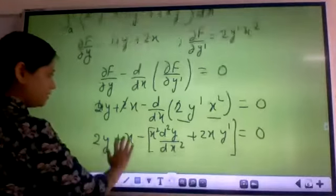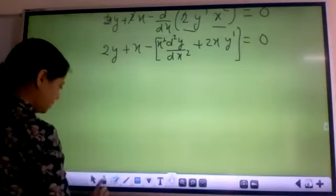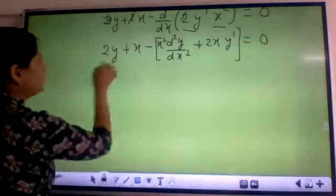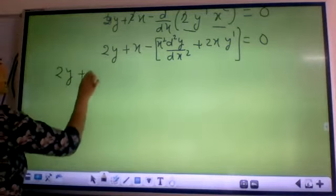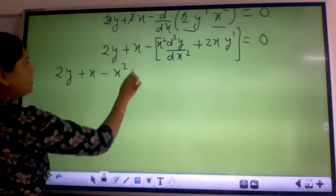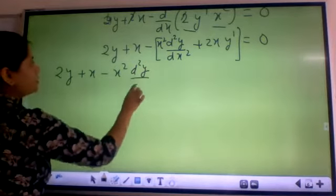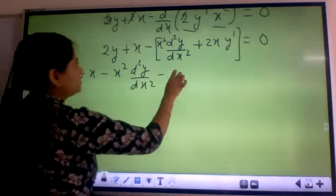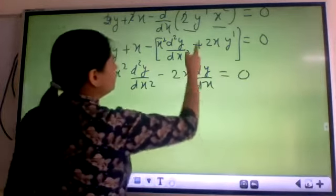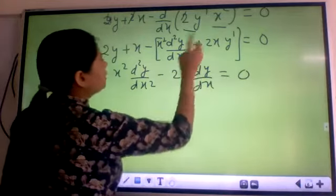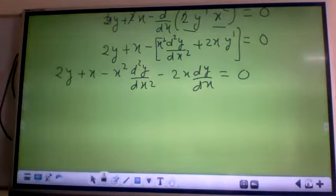Now next step, let me see what type of equation I am getting. If you arrange the terms now you have 2y plus x minus x² d²y/dx² minus 2x dy/dx is equal to 0. This 2 we already cancelled but differentiation it came away.